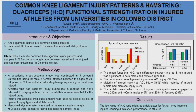My objectives are to describe common knee ligament injuries among athletes and to compare the hamstring to quadriceps functional strength ratio between injured and non-injured athletes in Colombo District.